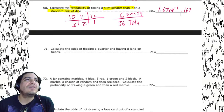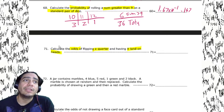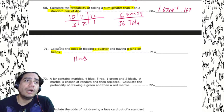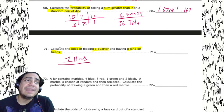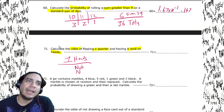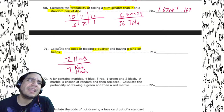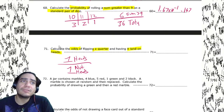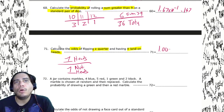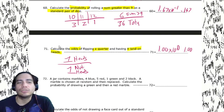Calculate the odds of flipping a quarter and having it land on heads. There is one heads and one not-heads. So the answer is one divided by one — but you must write 1.00, not just one. That's 1.00 times 10 to the zero. Standard notation is the preferred way.